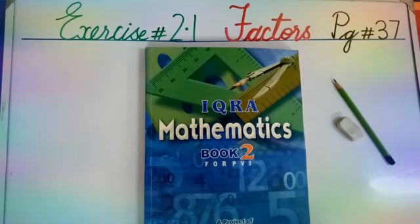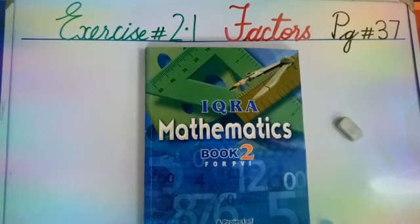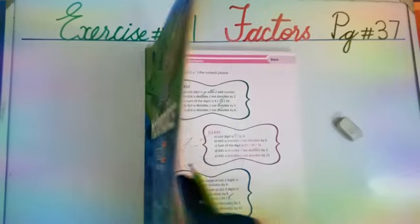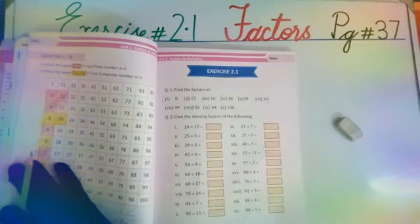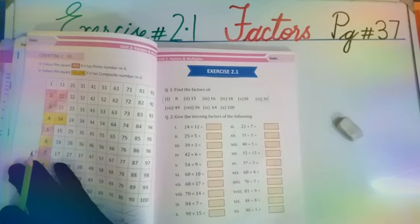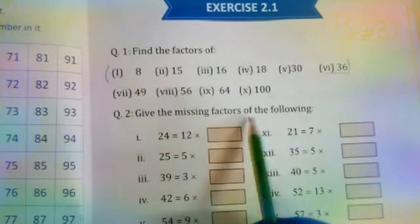Today we are going to start question number 2 of exercise 2.1 in Ikra Mathematics book 2. So please open your page number 37. This is page number 37, and start question number 2. The question is, give the missing factors of the following.